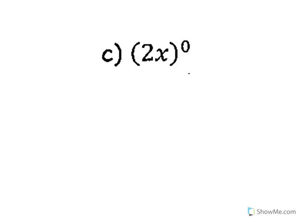Problem C: the whole thing is raised to the zero power, so two goes to the zero power and x goes to the zero power. If the whole thing is raised to the zero power, the whole thing is going to end up being one. The slow way: two to the zero is one, x to the zero is one, so one is my answer.